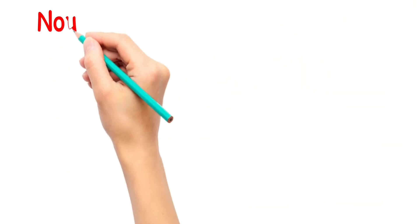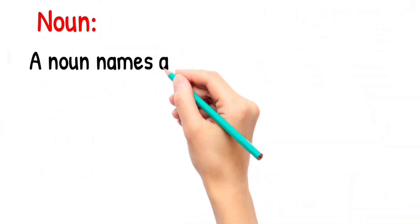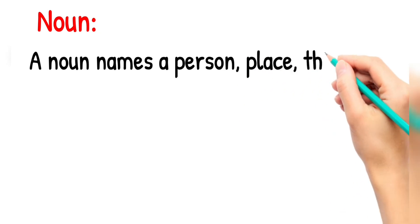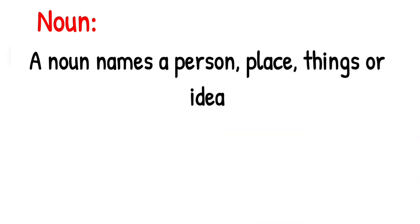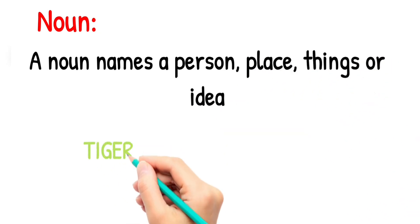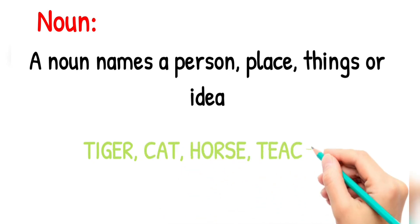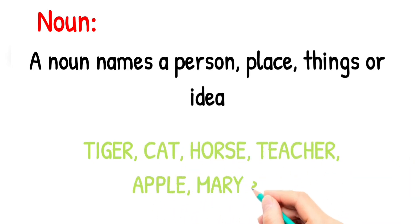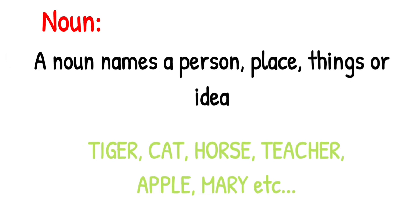Noun. What is a noun? A noun names a person, place, thing, or idea. Examples: tiger, cat, horse, teacher, apple, Mary.